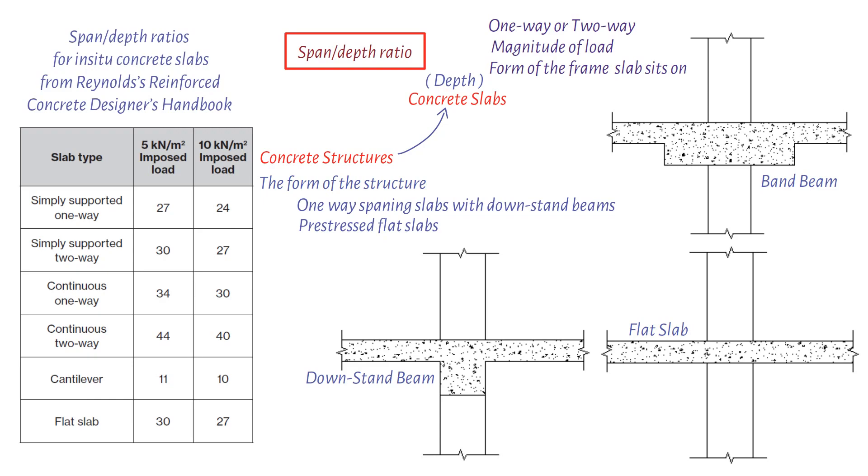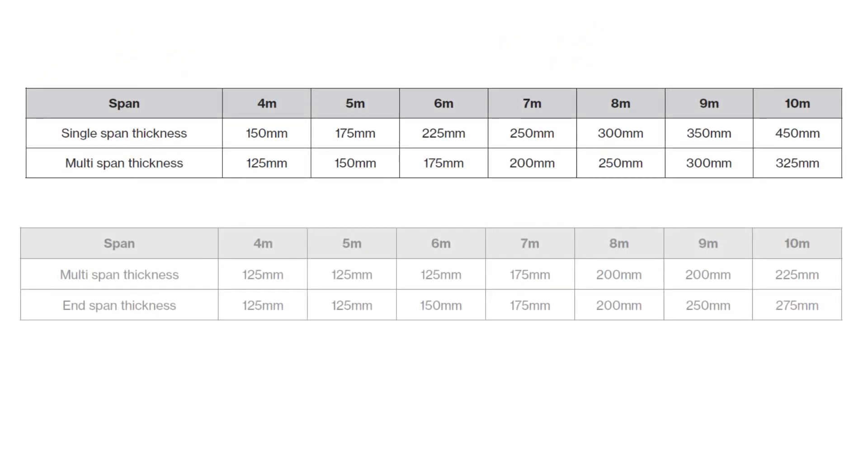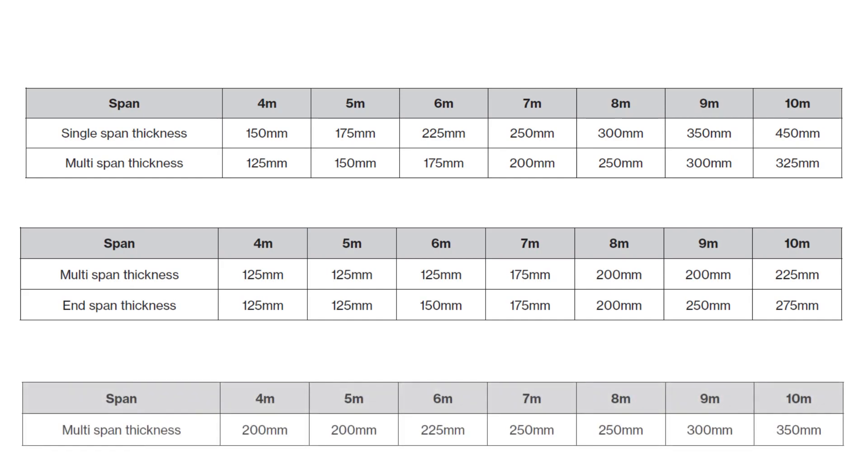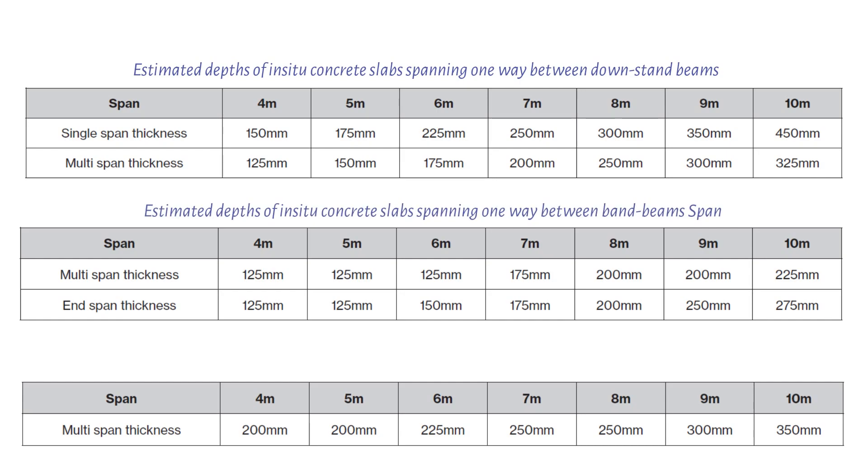In addition, the following tables are slightly more accurate estimated depths of one-way spanning slabs for a downstand beam structure, a band beam structure, and a flat slab respectively. They assume a blanket imposed load of 2.5 kilonewtons per square meter and a superimposed dead load of 1.5 kilonewtons per square meter for single and multi-spanning slabs.